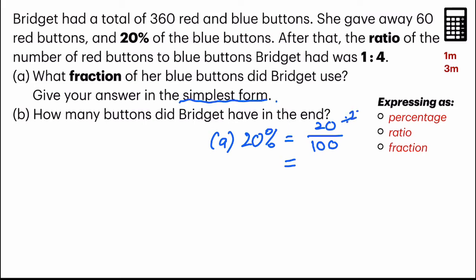And I have to express it in the simplest form. To do so, I just divide the numerator and denominator by 20. And I get 1/5. And that's my answer for part A, which is just one mark.